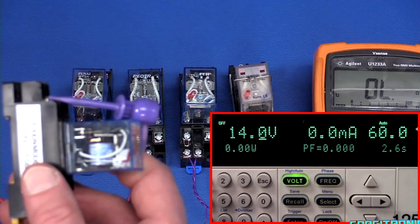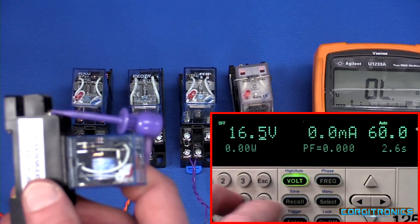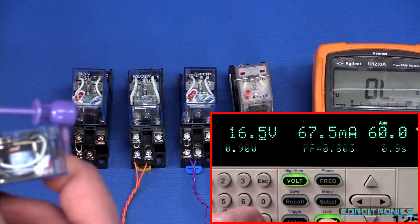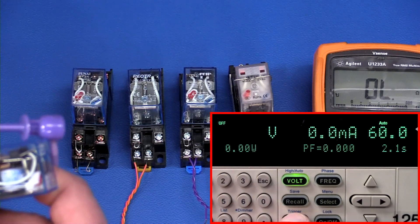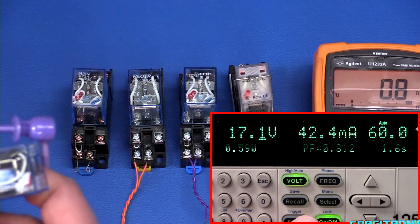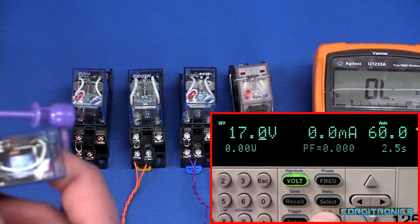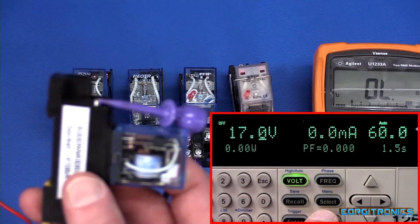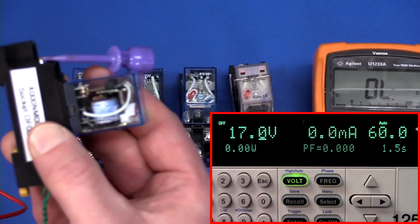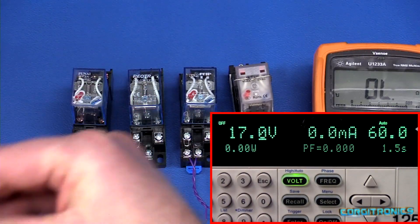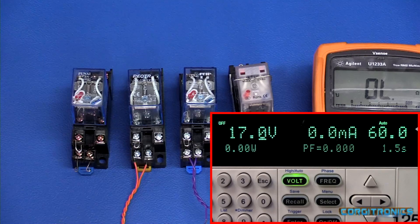16.5 volts. There we go. 17 volts. This one works just fine at 17 volts. Not bad, I guess, for a 24-volt relay. Let's see if we can find something that works a little more reliably at 16 volts.